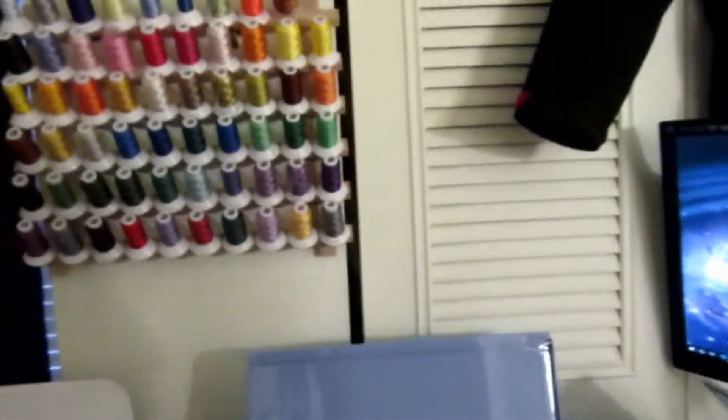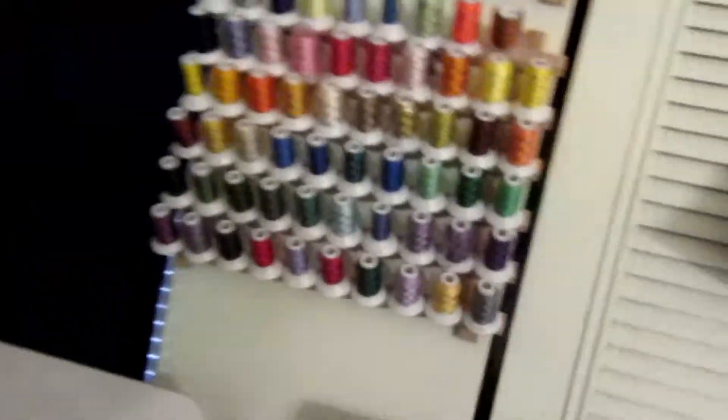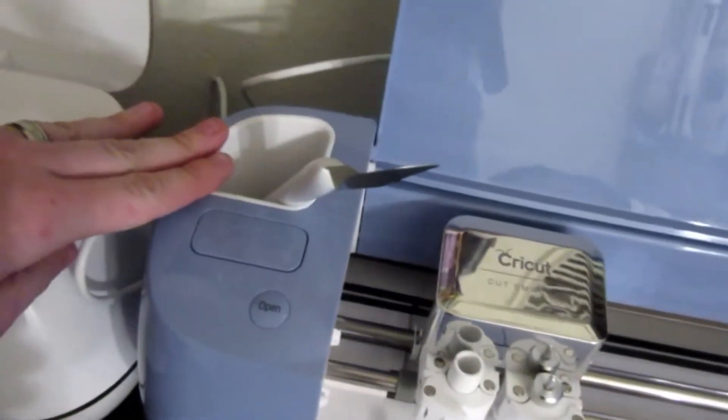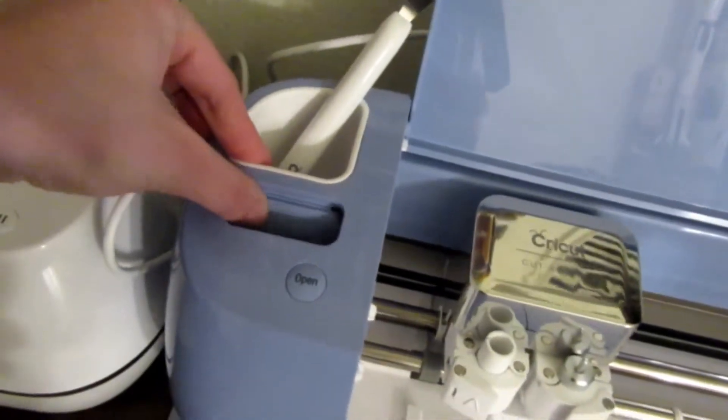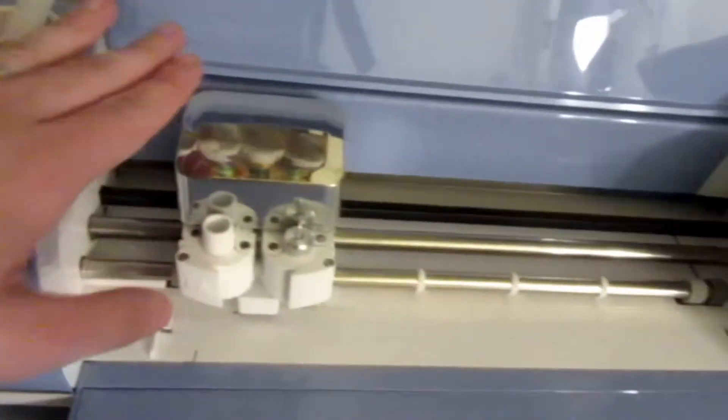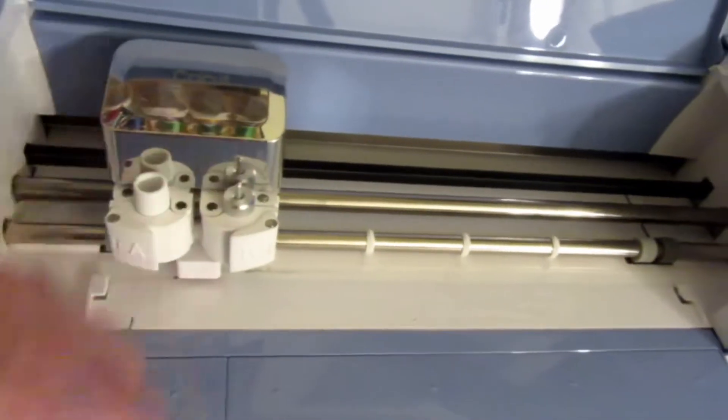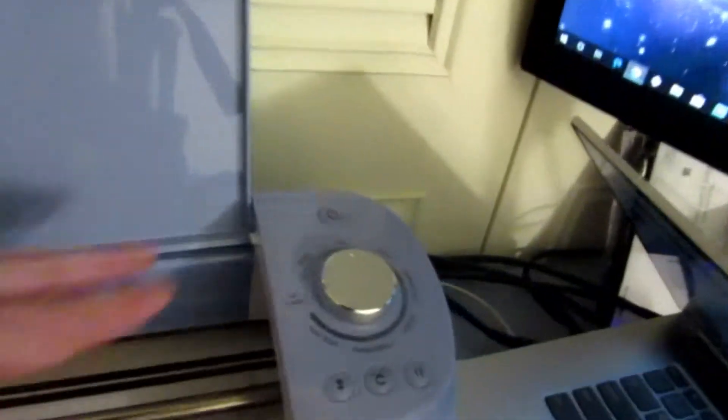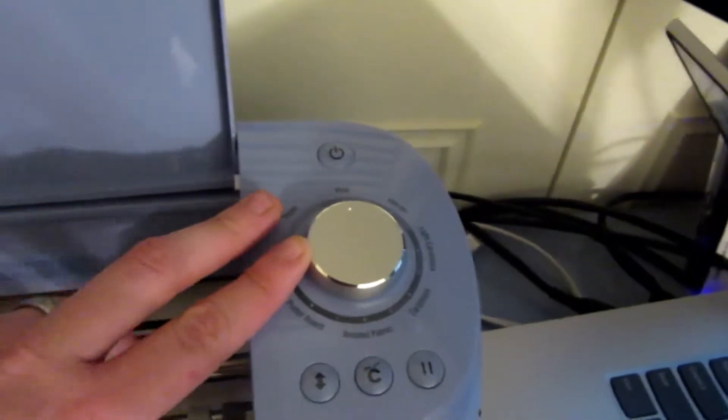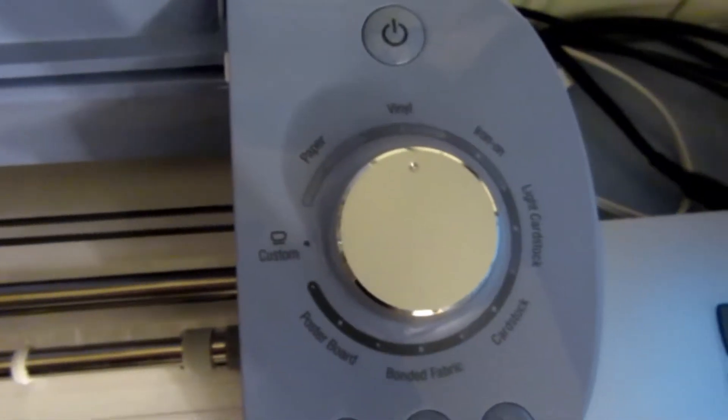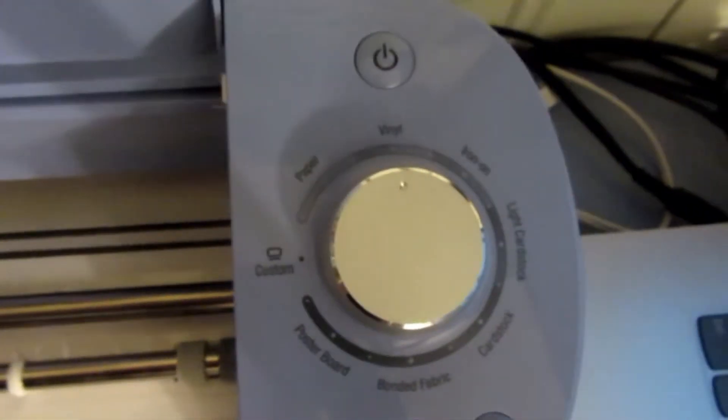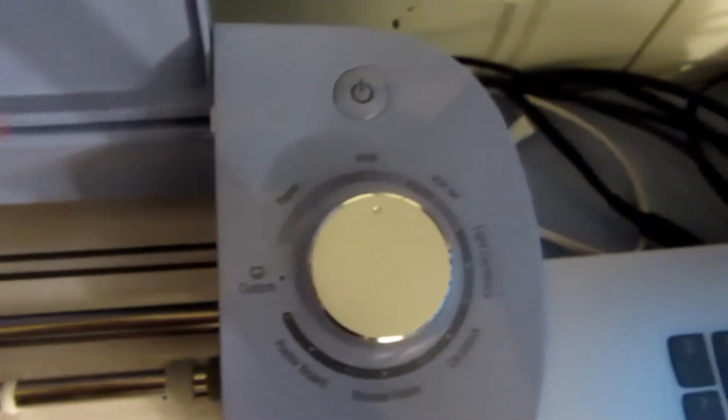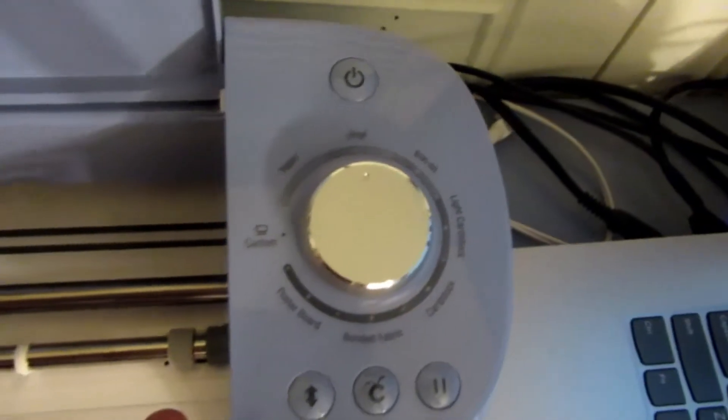But the differences are that with the Cricut Explore, it does have the little storage here, as you can see. But it also has a slot for the cartridges. And then you can see the open button, where you can put your pen and then your blades. And then the knob is also another different thing. This is actually the setting that you use for whatever you're going to be cutting from and with. And the power button.